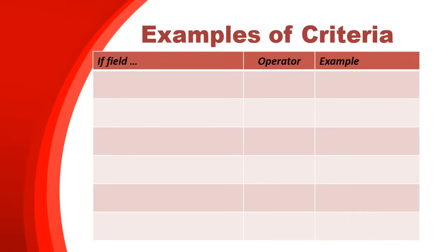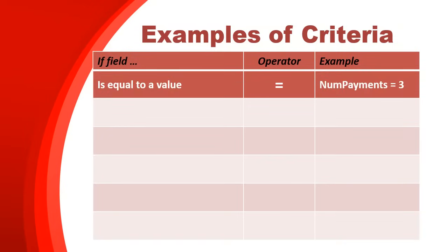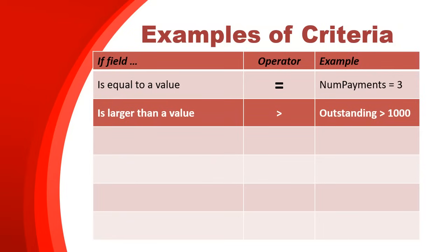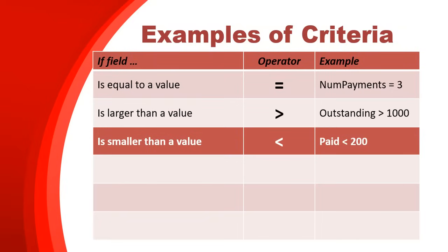So that's the benefit of a query. When we deal with queries there are some things we need to compare against - the criteria or conditions. The operators we use will probably be familiar to you. For example, you can check if something's equal to something using the equal sign. If we've got a field called num_payments we can check if it equals three. If we want something bigger, we use the greater than symbol - for example, outstanding payments more than a thousand. For smaller values, we use the less than symbol.